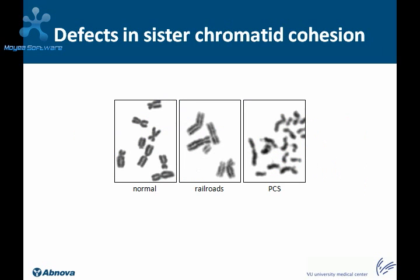When something goes wrong in sister chromatid cohesion in a cell, defects are displayed in metaphase chromosomes. While normally chromosomes are X-shaped due to constriction at the centromere, cohesion-defective cells can show chromosomes that look like railroads because of a lack of cohesion at the centromere. Or the cohesion between sister chromatids can be totally lost, which is called premature chromatid separation, or PCS.